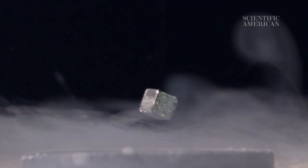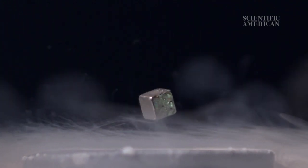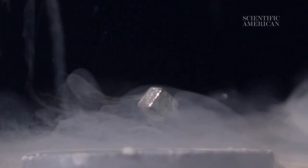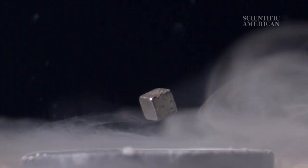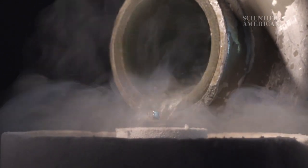One interesting property of superconductors is they can levitate magnets. The cube shown here is a magnet only 2.4 millimeters long on each side, and it's floating above a superconducting material cooled by liquid nitrogen.